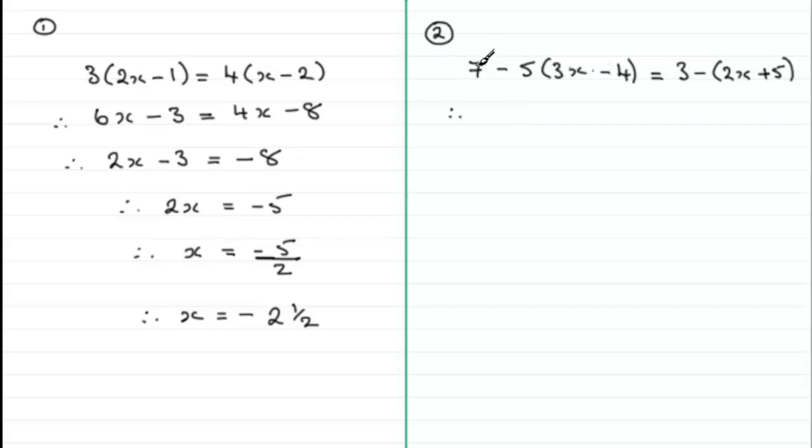So we just keep the seven there. And we now expand this bracket. We've got minus five times the three x and then minus five times the minus four. So minus five times the three x is minus fifteen x. And minus five times the minus four is plus twenty.